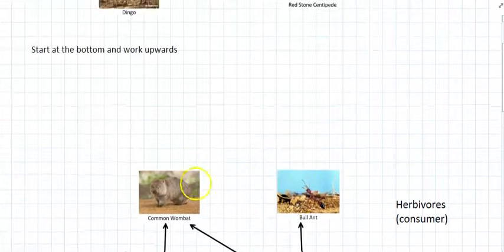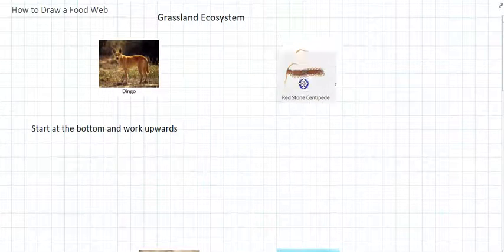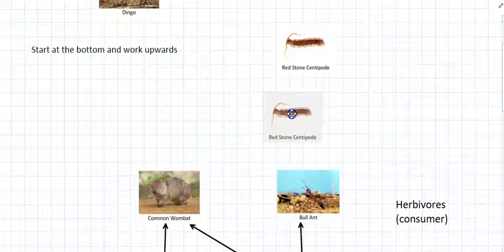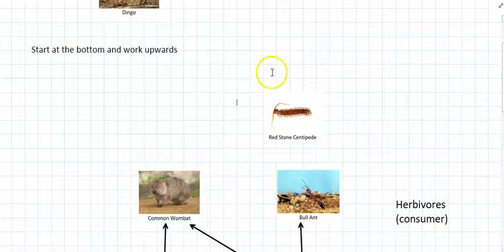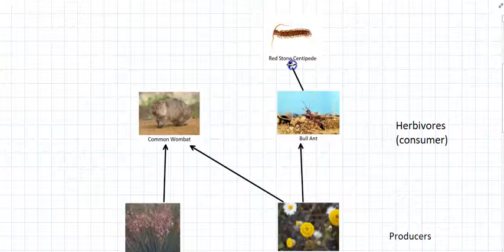So there are herbivores. Now we need to figure out what eats those herbivores. Well, centipedes, they prey on other insects. So they are going to go above the bull ant. So we'll draw an arrow from the bull ant to the centipede.